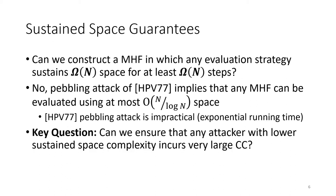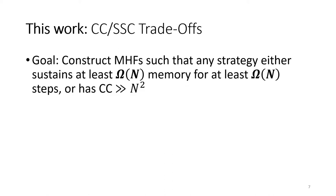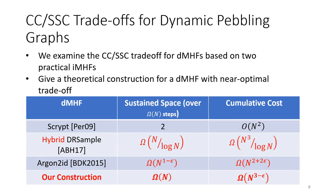The key question is whether we can ensure that an attacker with low sustained space complexity has very large cumulative complexity. In this work, our goal is to construct memory hard functions such that any strategy either sustains n space for n steps, or has cumulative complexity much greater than n squared. We've already seen that S-crypt can be computed using constant space for n squared steps, so we examine two memory hard functions with high trade-offs, and then give a theoretical construction with near-optimal trade-offs.